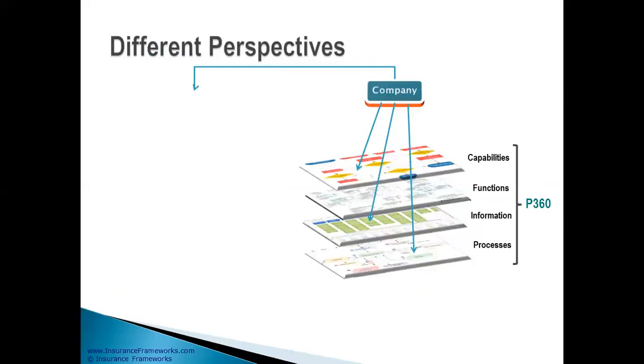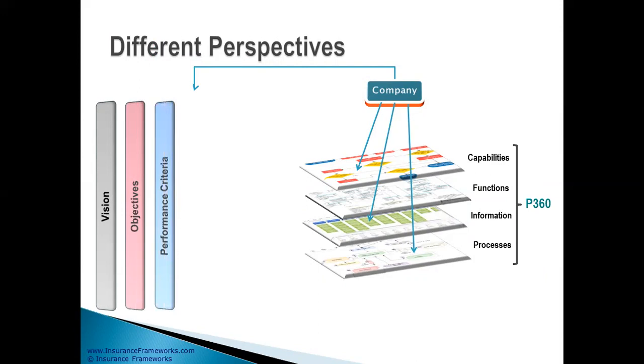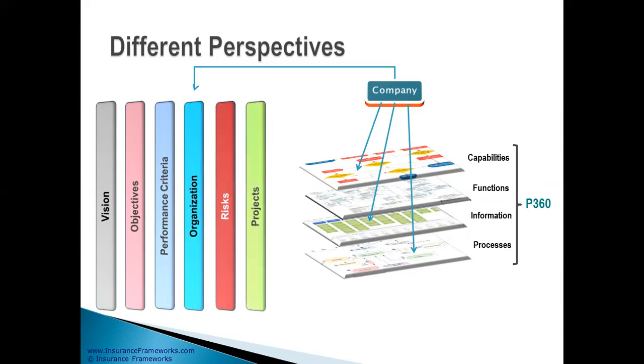Companies that have tools like Sparx Enterprise Architect can map their capabilities, their functions, their information and their processes against their vision, against their objectives, performance criteria, the organization structure, business risks, projects, customer journey, and there can be a lot more overlays over the models.